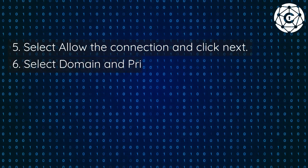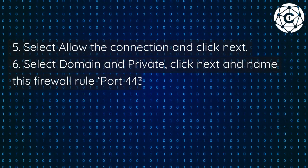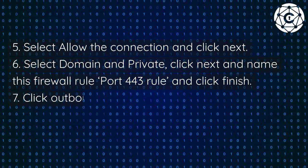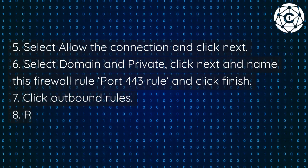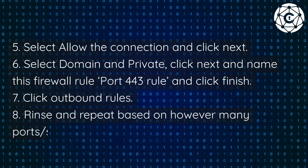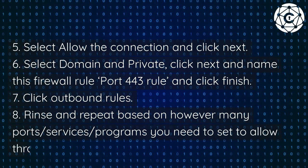Step 5: Select Allow the Connection and click Next. Step 6: Select Domain and Private, click Next, and name this firewall rule — for example, Port 443 rule — then click Finish.